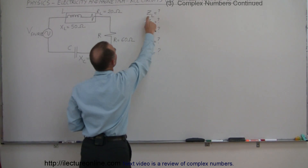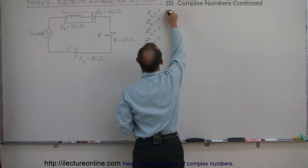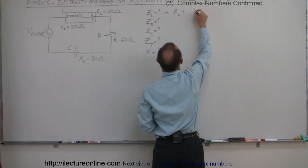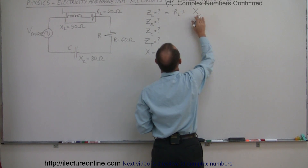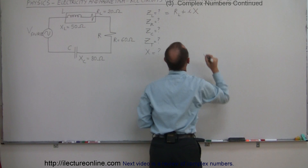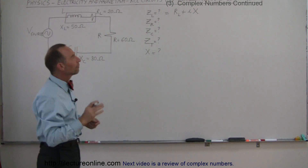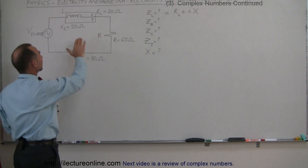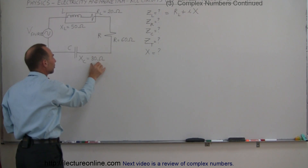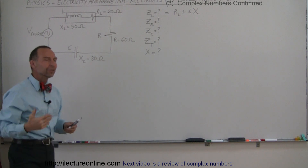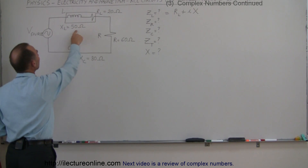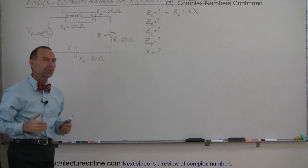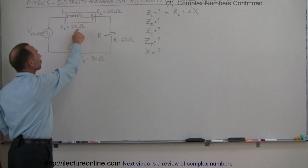The impedance of the inductor is always equal to the sum of the resistance of the inductor plus the reactance of the inductor, but the reactance is out of phase with the resistance by 90 degrees, so we have to use the imaginary part, i. If we now plug the numbers in — I gave you that the resistance was 50 ohms and the reactance was 80 ohms — later on in future videos I will show how to actually calculate these, because they depend on the frequency of the source.